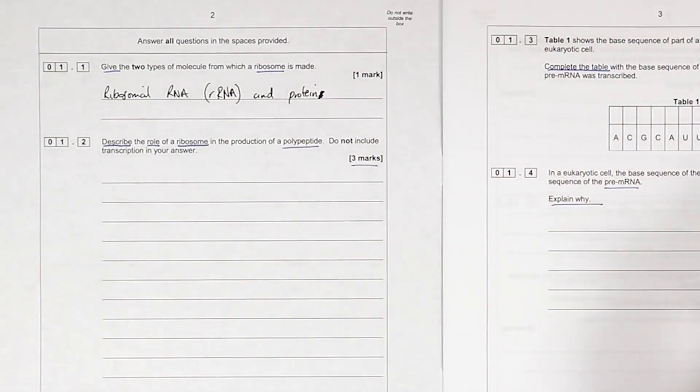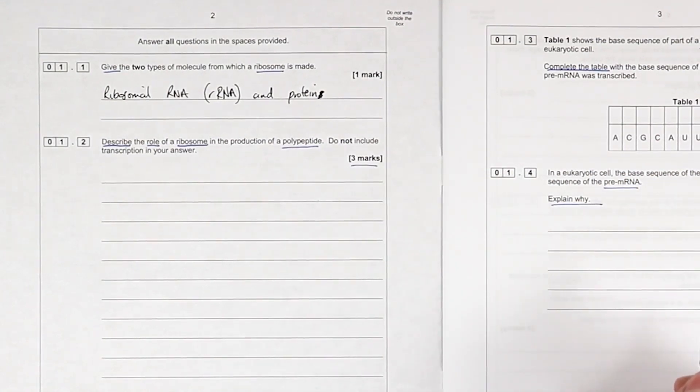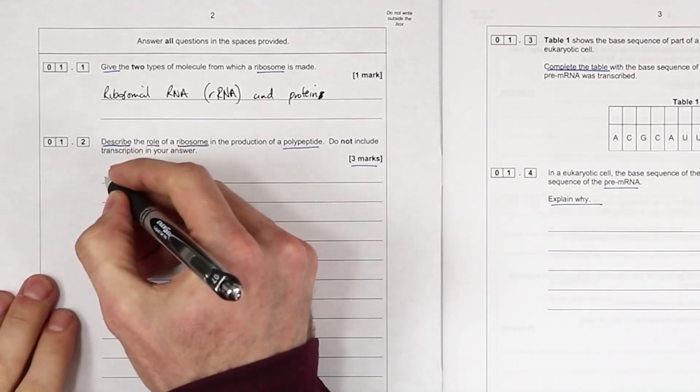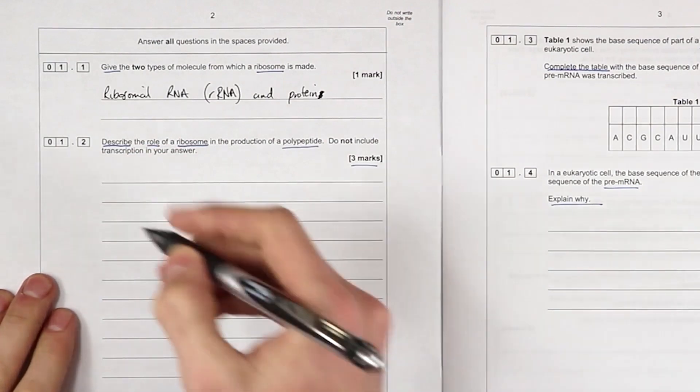Describe the role of ribosome in the production of a polypeptide. So what do they do? It holds the messenger RNA in place. I'm going to say it attaches at the start codon.